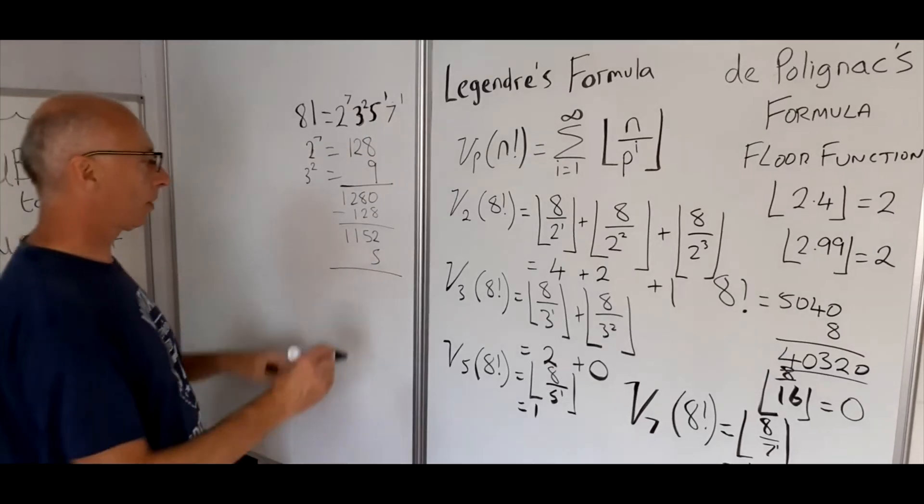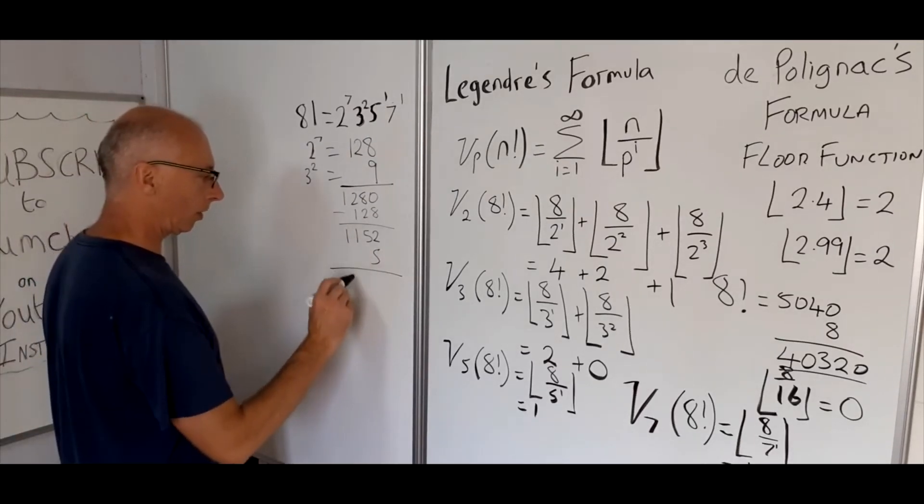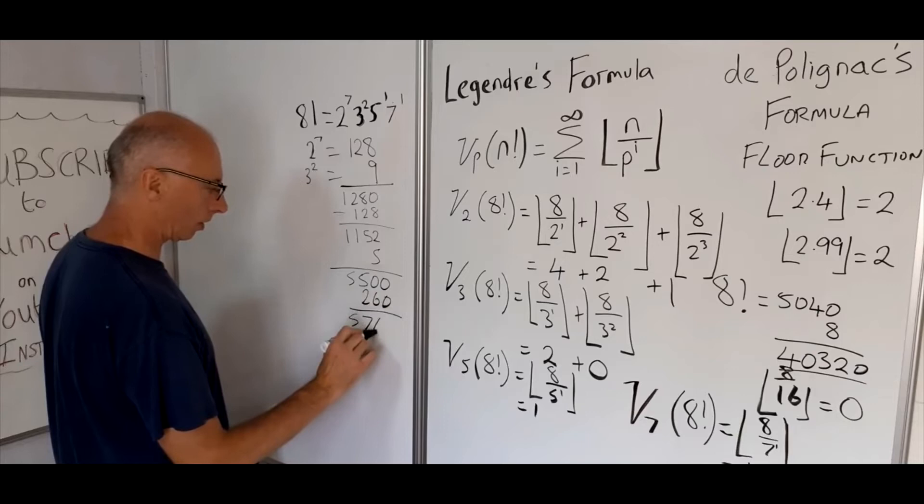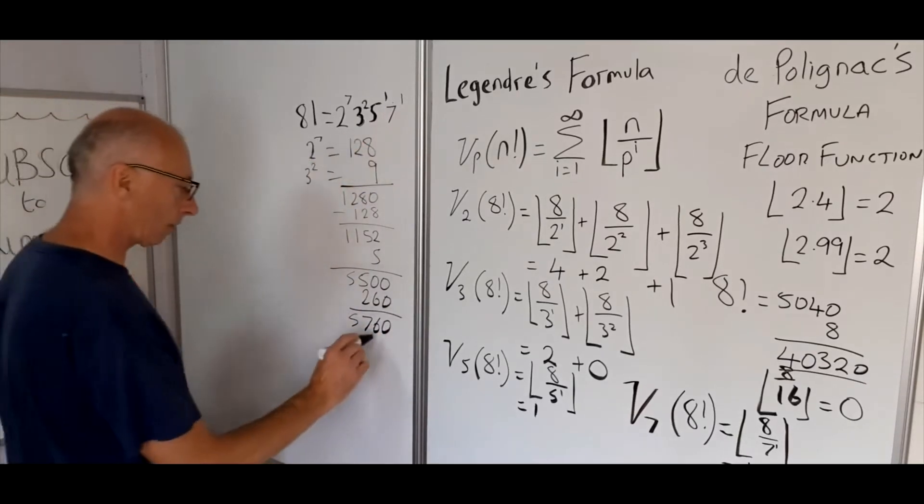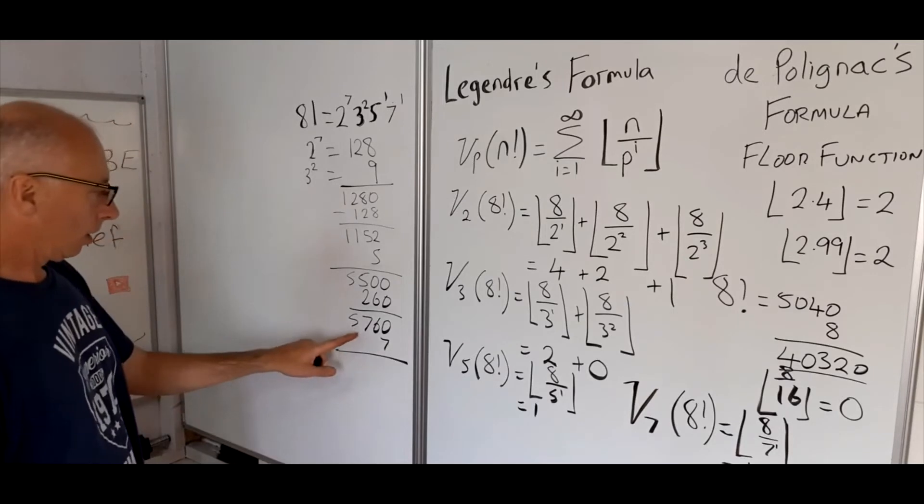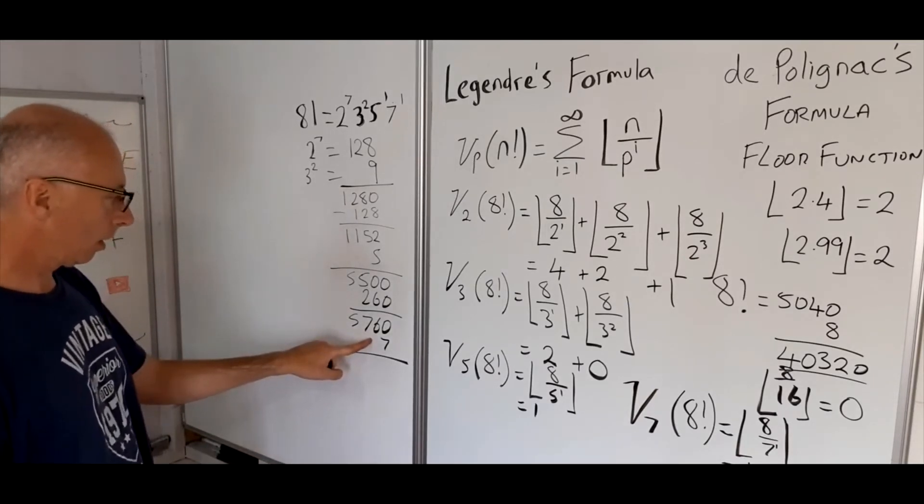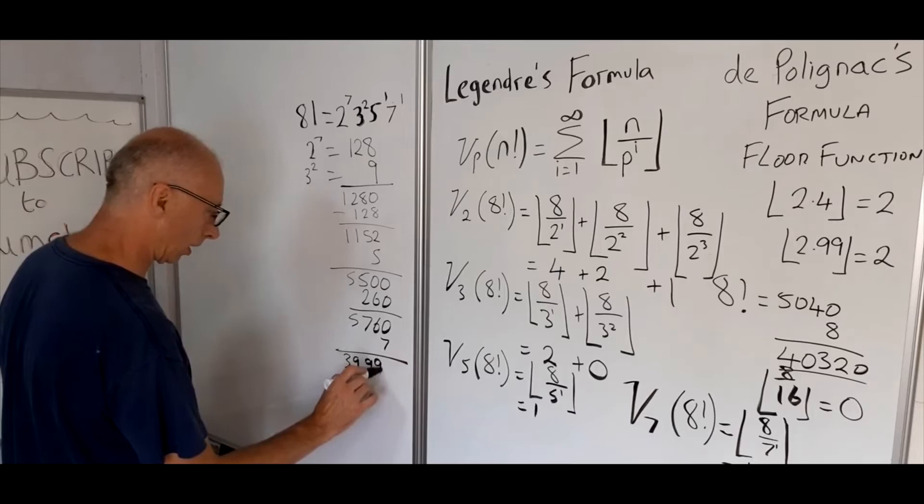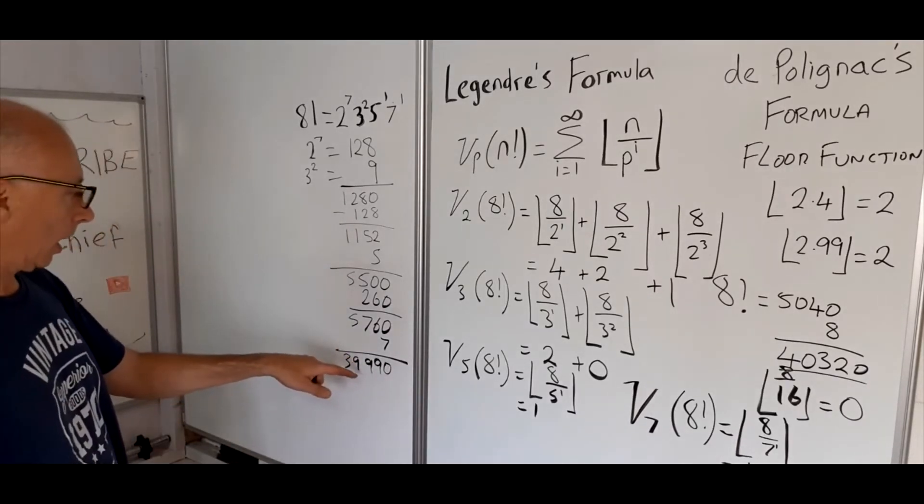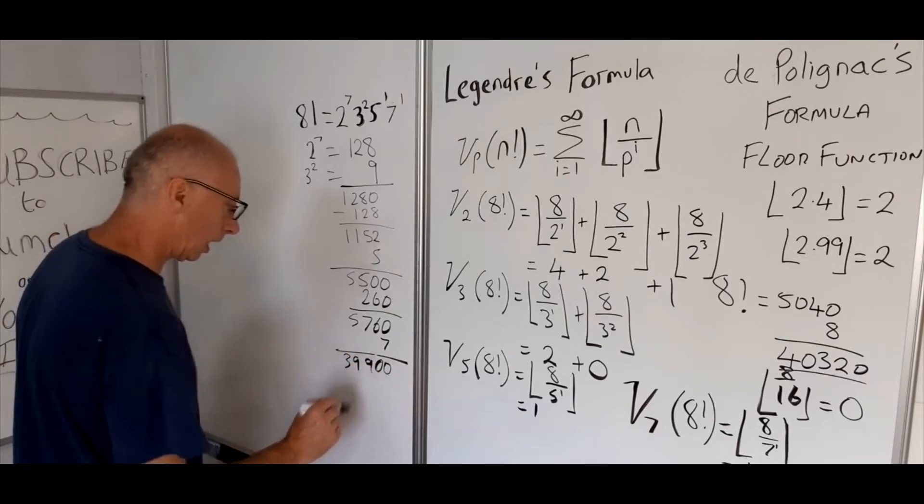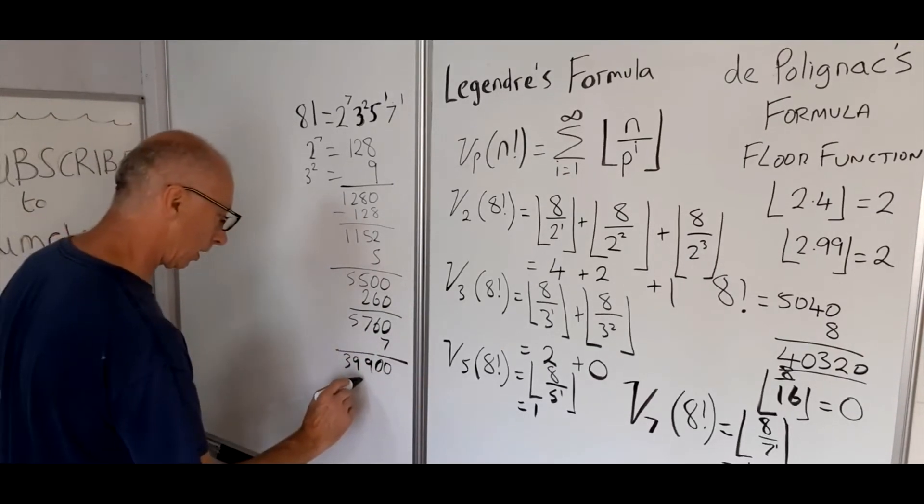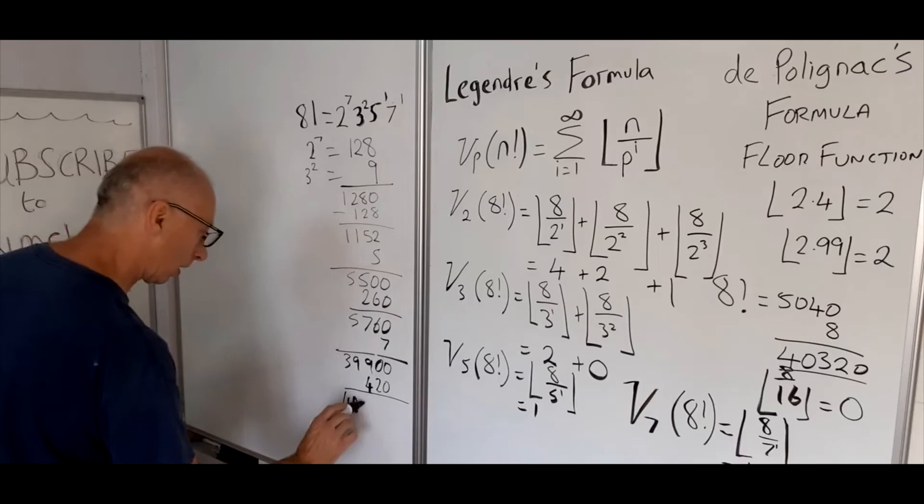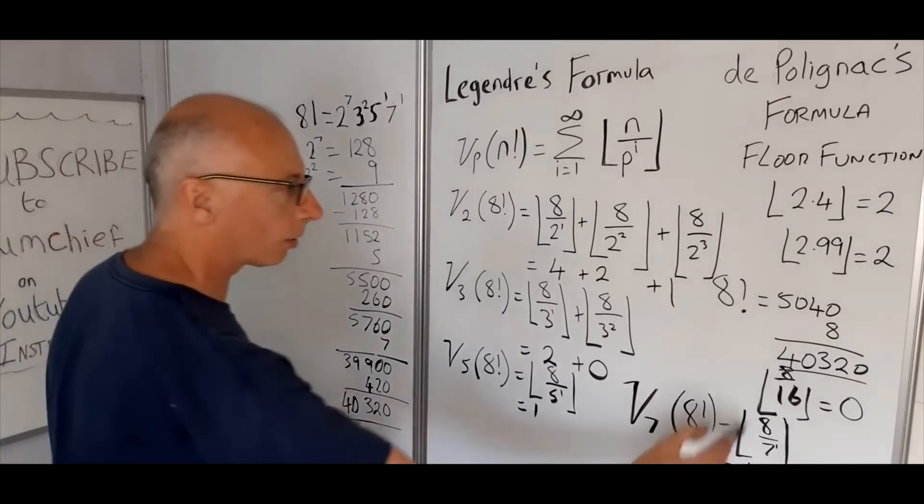1,152 times 5 is 5 times 1,100 is 5,500. 5,500 plus 260 is 5,760. And then times this by 7. 7 times 57 is 35, 399. So that's 39,990. And then 7 times 60 is 420. That's going to give us our grand total of 40,320, which is what we wanted.